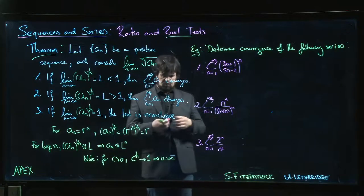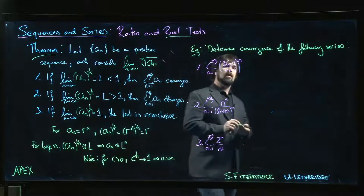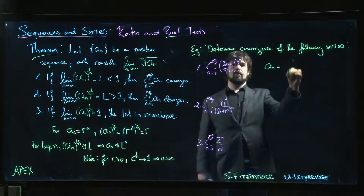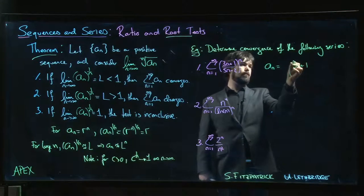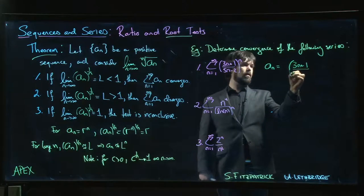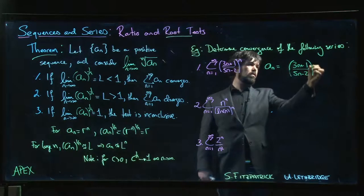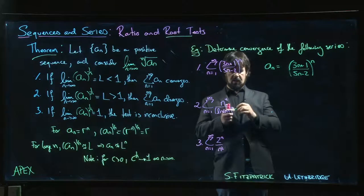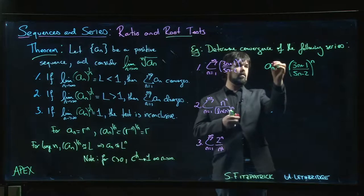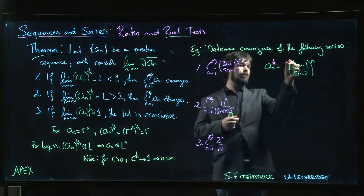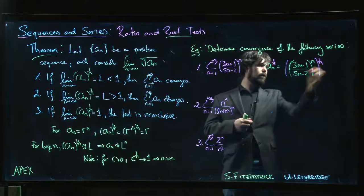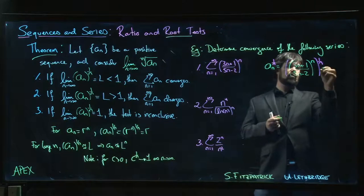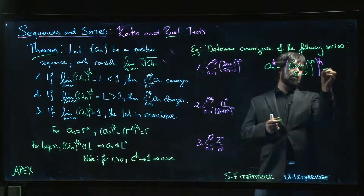Here's one where it's probably clear that it's easy to use the root test because a_n is (3n+1)/(5n-2) to the power of n. And if we want to now take that and raise it to the power 1 over n, well those two exponents they cancel each other out.